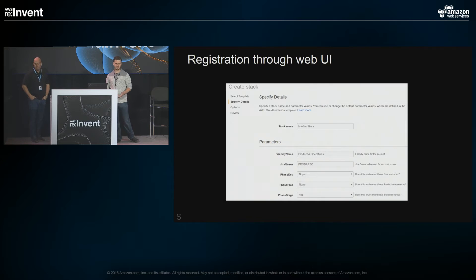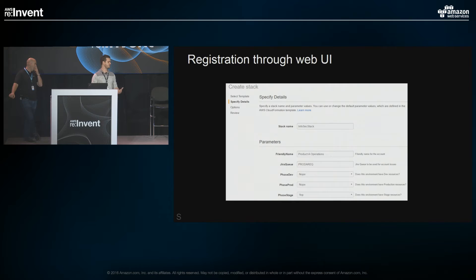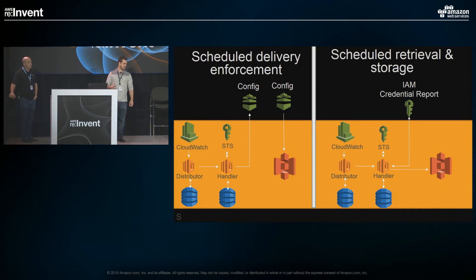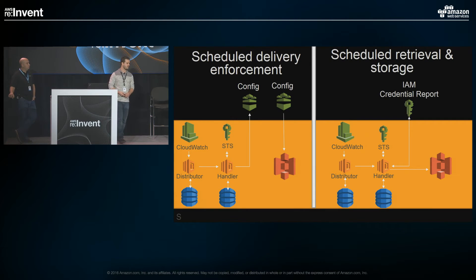If you haven't used CloudFormation, it's very simple. It prompts you for a stack name — which for us doesn't matter, that's entirely for the account being registered. They're also prompted for the name, the Jira queue, and what environment phase they're in: dev, stage, or prod. Once the role is in place, we have a handful of Lambda functions that operate on a trigger — most triggers are every day, which is fine enough granularity. Some are every six hours for things that are more dynamic and change more often.